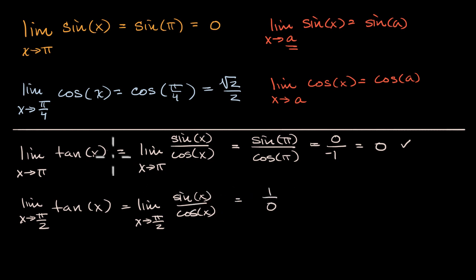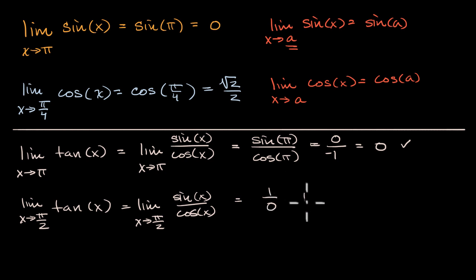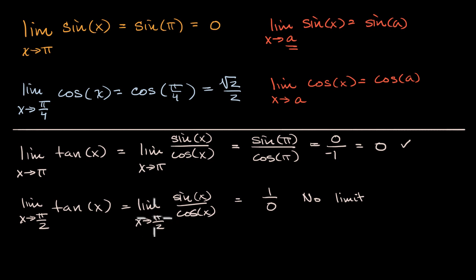In general, if we're dealing with sine, cosine, tangent, cosecant, secant, or cotangent — if we're taking a limit to a point that is in their domain, the value of the limit is going to be the same as the value of the function at that point. If the point is not in their domain, there's a good chance the limit does not exist. You can deduce this because pi over two is not in tangent's domain — if you were to graph tan of x, you would see a vertical asymptote at pi over two.